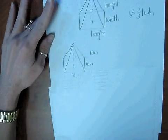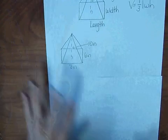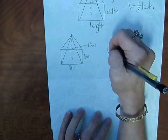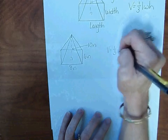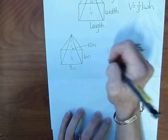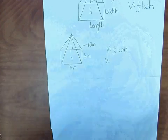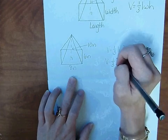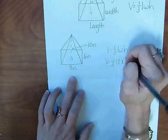Alright, so let's go ahead and find volume. Write your formula. Volume equals one-third length times width times height. So plug in what you know and solve for what you don't know. So one-third times 8 times 6 times 10.